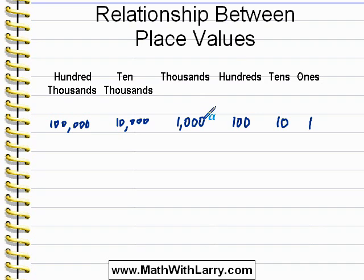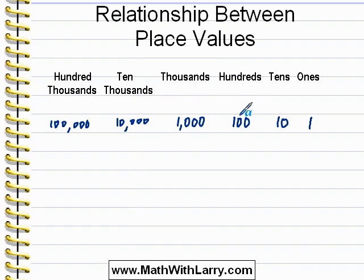Now we can look at it the other way. As we move to the right, the place values become ten times as small — or they become one tenth the size. So if we compare one thousand to one hundred, one hundred is ten times as small as a thousand. Or we can say that one hundred is one tenth of a thousand.